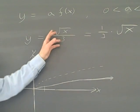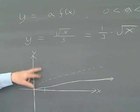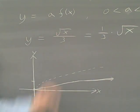Now, had this been 3 times the square root of x, of course each point would have been 3 times as high, and it would have looped out like that.